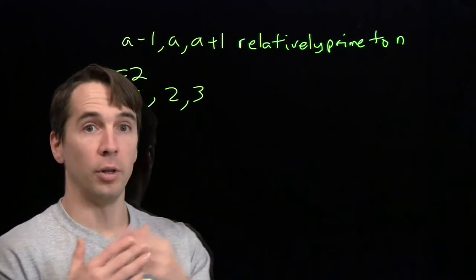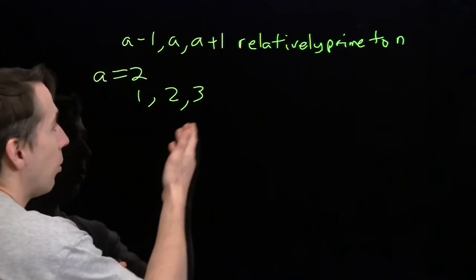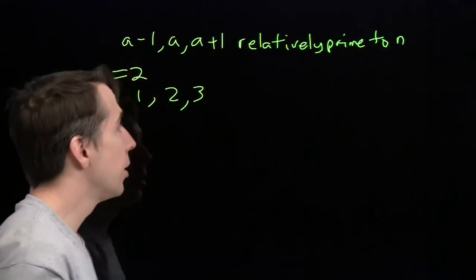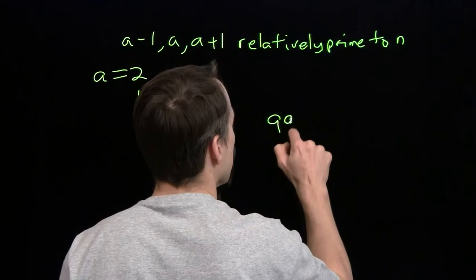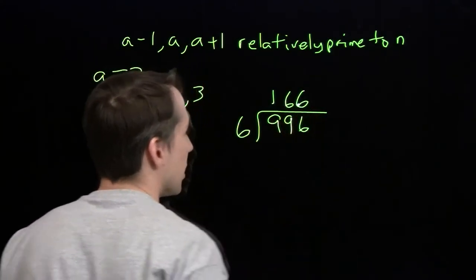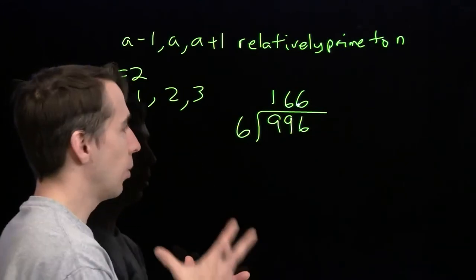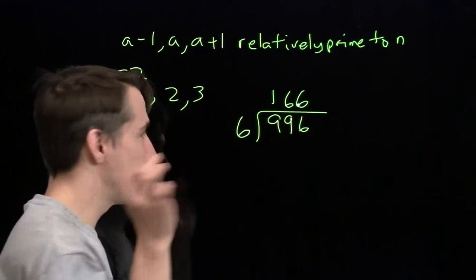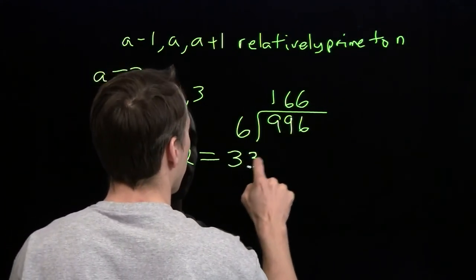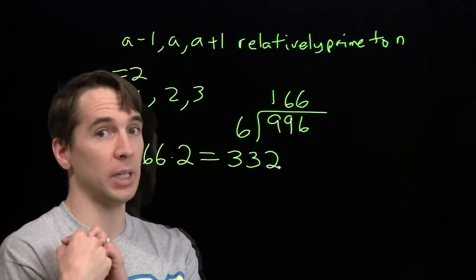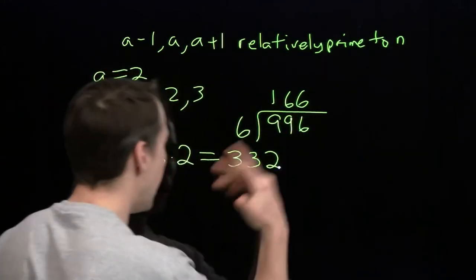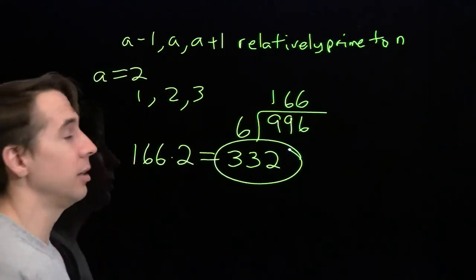We want the numbers between 1 and 1,000 that are relatively prime to both 2 and 3. Think of numbers from 1 through 6: only 1 and 5 are relatively prime to 2 and 3, so in each group of 6 we get 2 valid values of n. Going up to 996, we divide by 6 to get 166 groups, giving 166 times 2 equals 332 values. We throw out n equals 1 at the start, but then n equals 997 pulls right back in. So we still end up with 332.